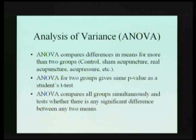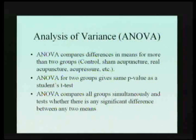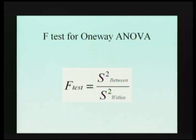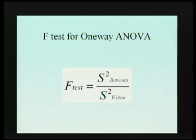You want some way of maintaining one single p-value and one significance level. This is what you get with analysis of variance. The analysis of variance does the same thing as a t-test — in fact, for two groups it gives the same p-value. But it compares all groups simultaneously and tests whether there's any significant difference between any two means. This is done with what's called an F-test. In the numerator it measures variability between your groups, and the denominator measures variability within your groups.